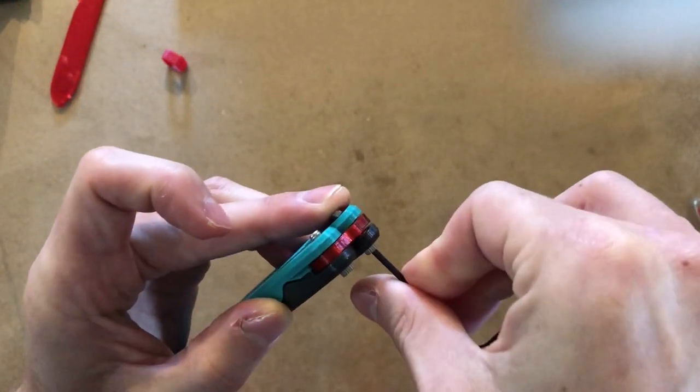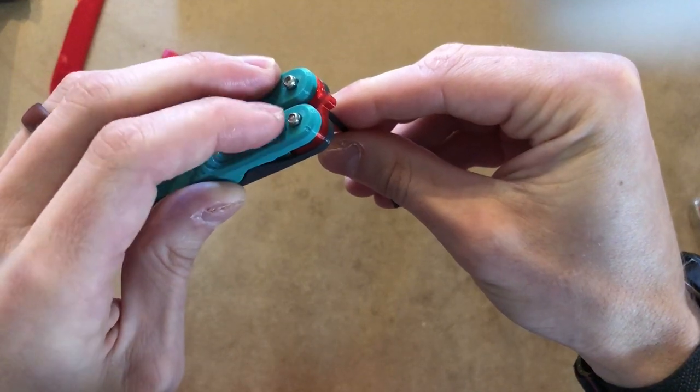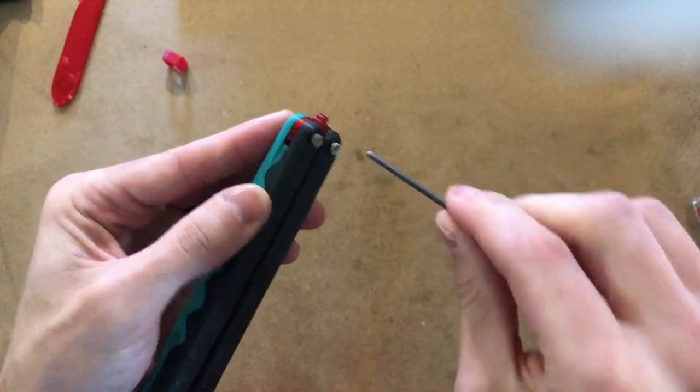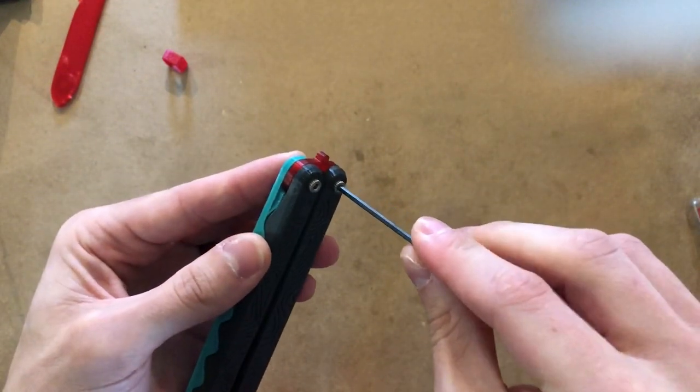Same thing lefty loosey, catch the threads, and then righty tighty. Make sure that the hex nuts are lined up with the hex hole in the handle and I'll just tighten them. At this point we can tighten them a lot more until we feel a light resistance.